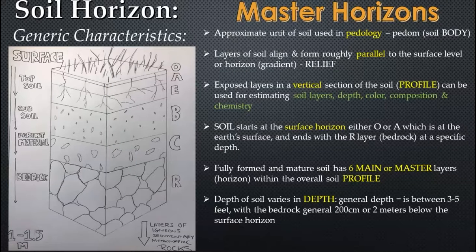So a master horizon — first, a horizon is a layer, an exposed layer of soil underground. You have your surface, whatever landscape that may be, and beneath the surface you have these layers of soil. Then you go down to a certain depth, usually between three to five feet, about one and a half meters, and you generally reach solid rock, which is called the bedrock or the R horizon. Each of these layers has sub-divisions and different characteristics within them, so the main ones we call master horizons, and there are six in total.